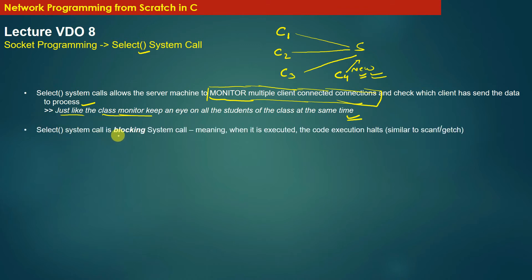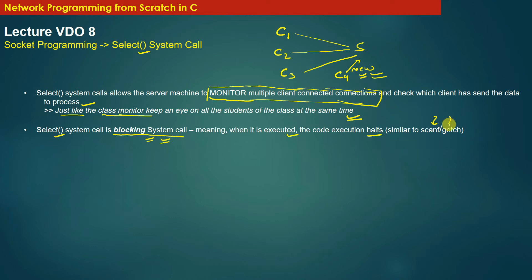The select system call is a blocking system call — the moment the server calls the select system call, it gets blocked. A blocking system call means that when the select system call is executed, code execution halts. For example, you may have used functions like scanf or getch in your programs and experienced that calls to these functions halt program execution. Similarly, the select system call also blocks the execution of a program.